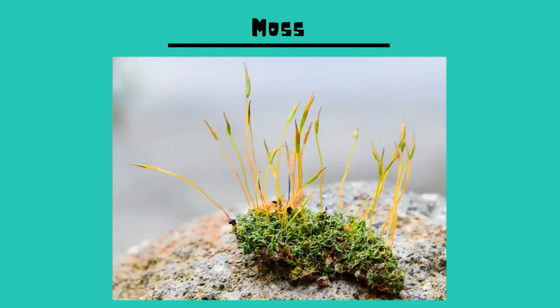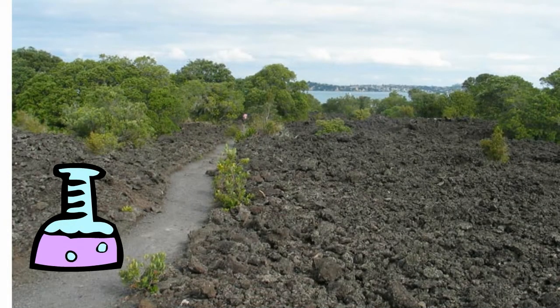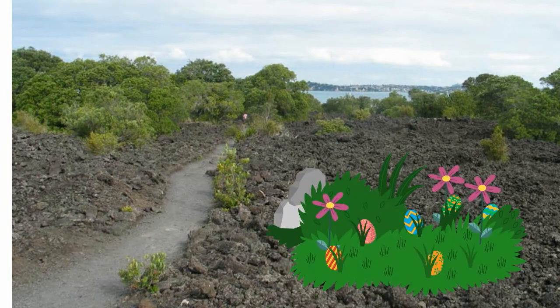Therefore moss can grow on the rocks much like the lichen. Because lichen and fungi release acids, they begin to break down rocks. As the pioneer species begin to die and leave behind organic material, it combines with this rock sediment and soil slowly begins to appear.